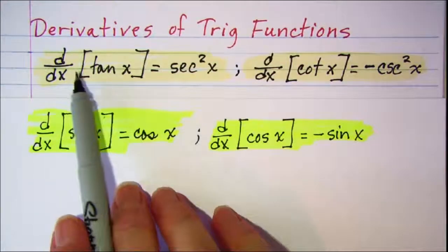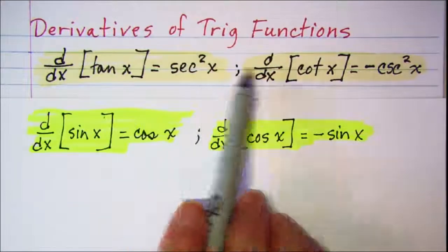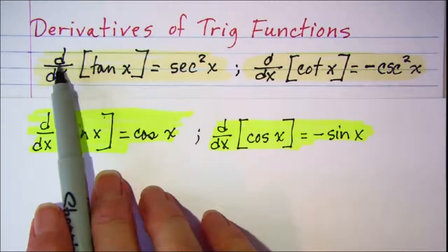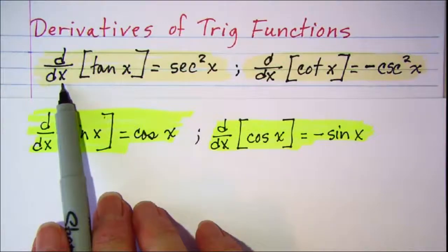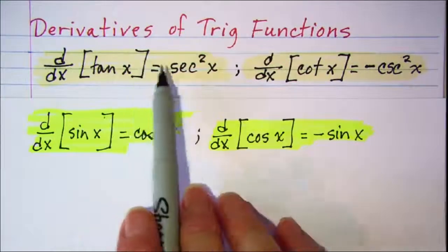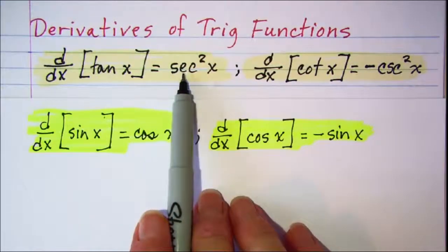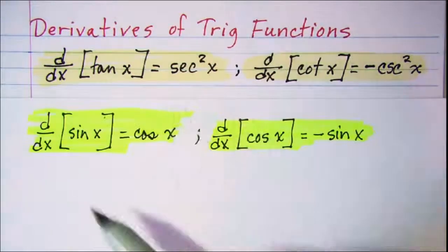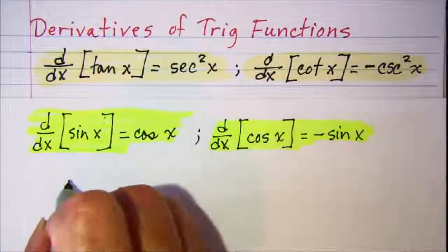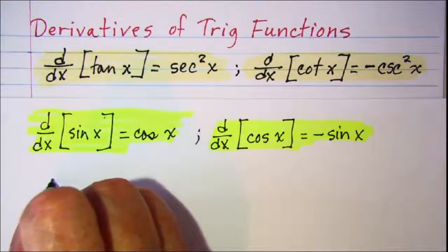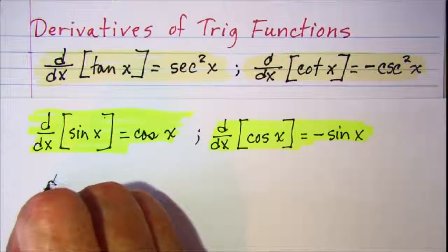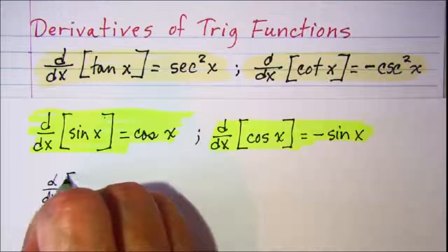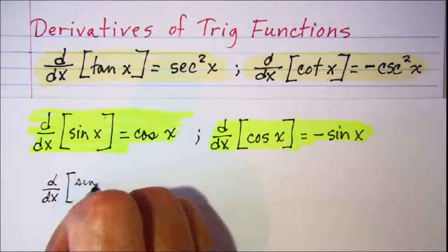Let me show you how we can get these derivative rules. The first one: the derivative with respect to x of tangent x is secant squared x. We can write tangent x as sine over cosine, so we want to find the derivative of sine over cosine.